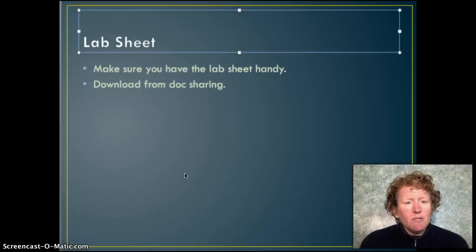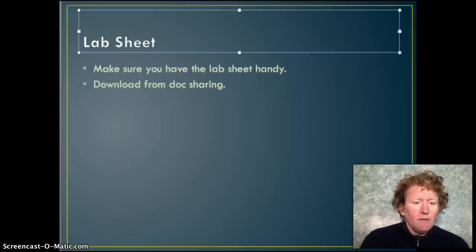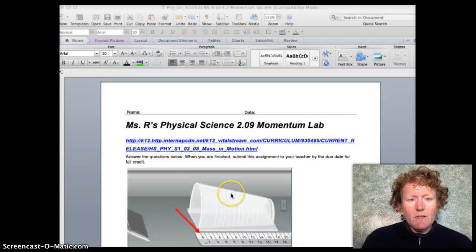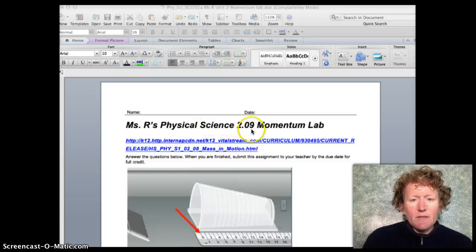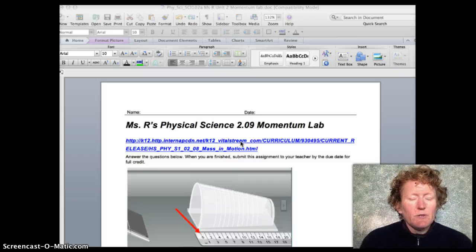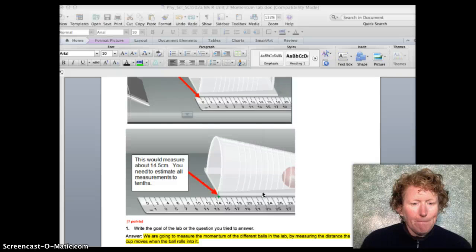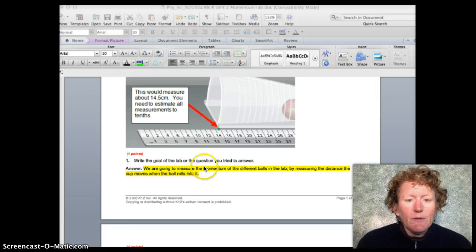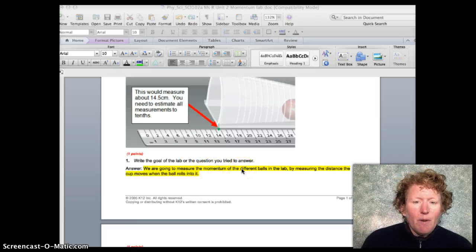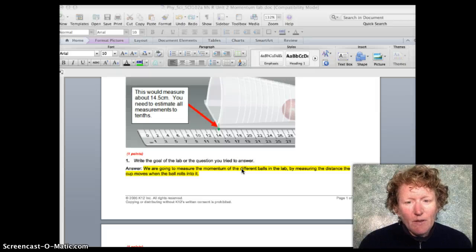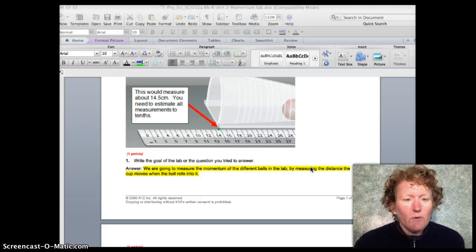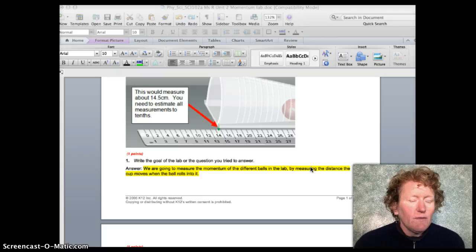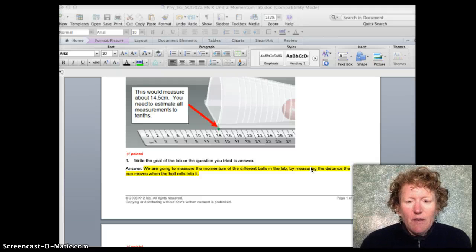Okay, now it's time to make sure you have your lab sheet handy. Download it from Doc Sharing if you need to. Here's what your lab sheet should look like. It should say Miss R's Physical Science class, Momentum Lab. There's the link to the lab, or I can show you how to get to it from the lessons. There's number one. The goal of the lab, or the question we're trying to answer, we're going to measure the momentum of the different balls in the lab—a steel ball, a plastic ball, a golf ball—by measuring the distance the cup moves when the ball rolls into it. And I'll show you what that all means in just a moment. So I even gave you the first answer here that should be on your lab sheet.